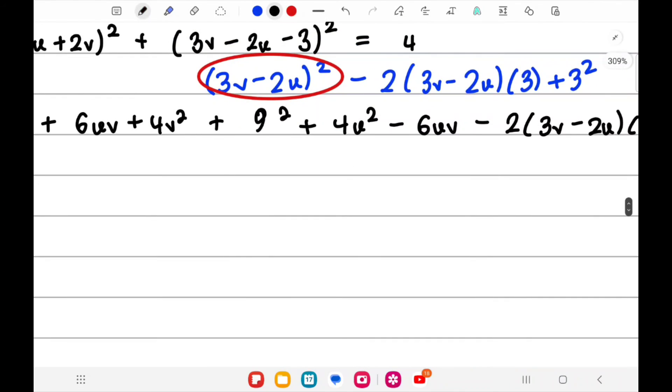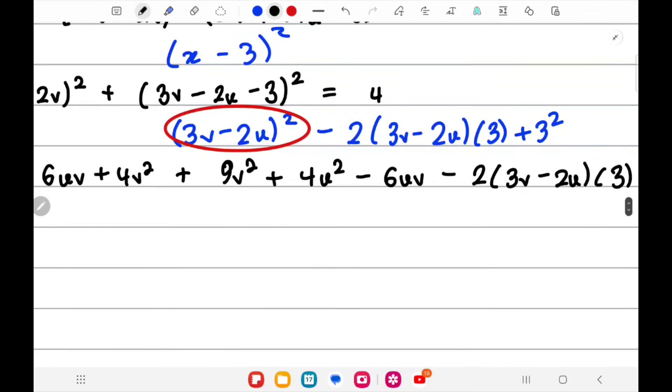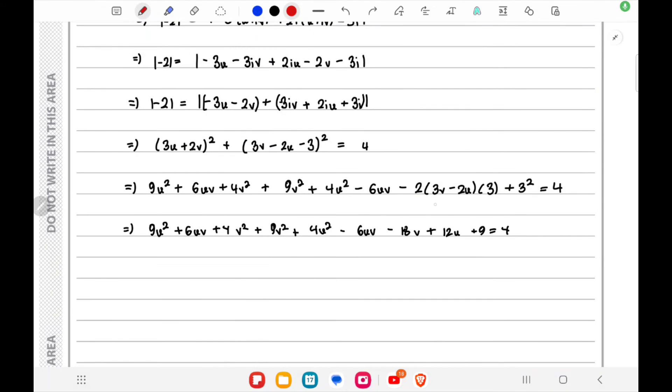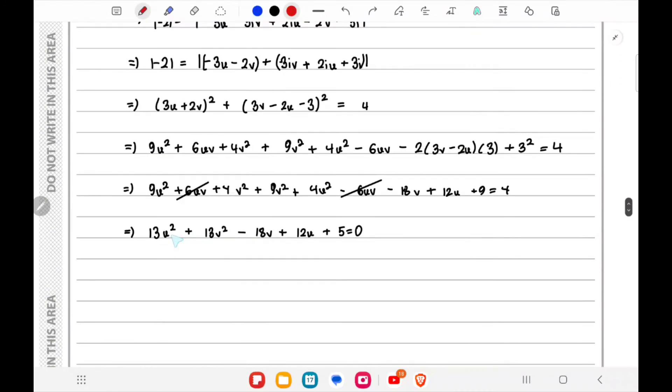Yeah, this would be 9v² (my bad). So we'll get 9v² + 4u² - 6uv—both of these are the same. Break the brackets, and 6uv and 6uv will cancel out, so I'll just cancel that out. I'll get 13u² + 13v² - 18v + 12u + 5.